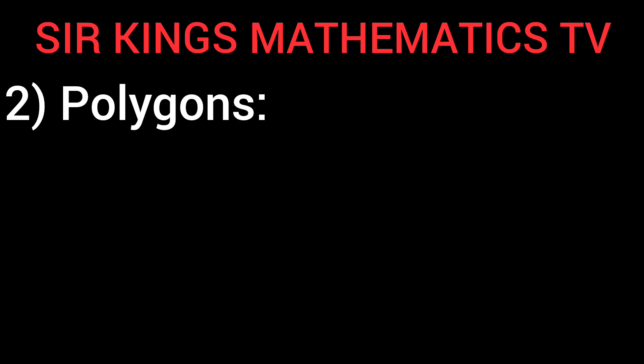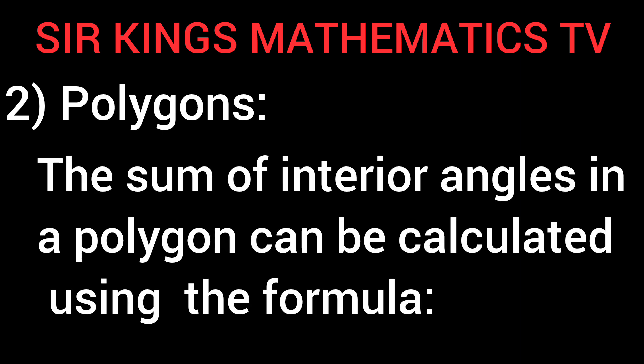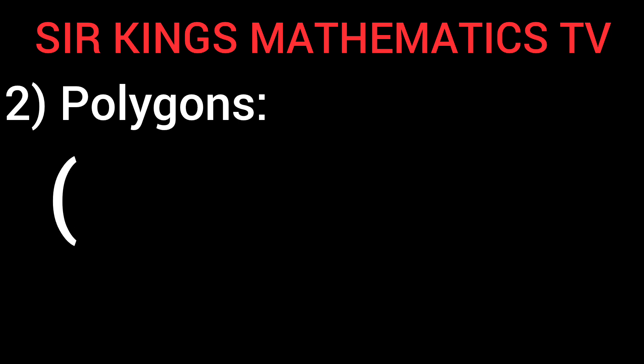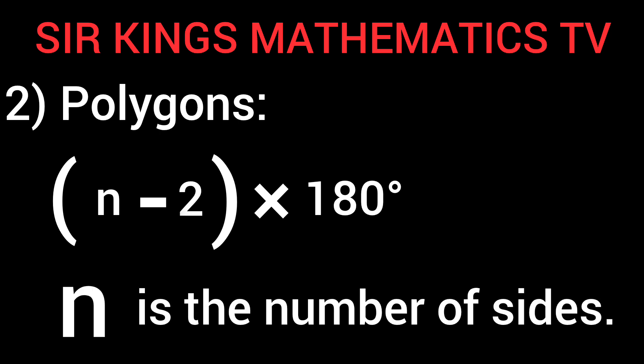Polygons: The sum of interior angles in a polygon can be calculated using the formula: (N - 2) × 180 degrees, where N is the number of sides.